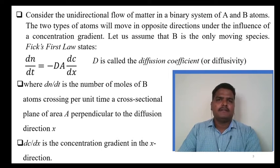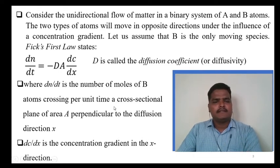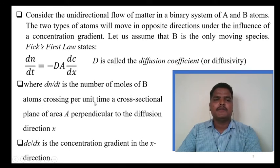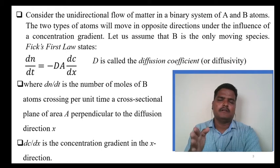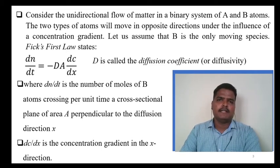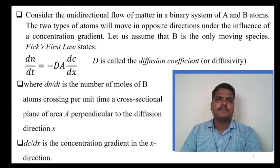We only consider flow of atom B into A. This law mathematically tells us dN/dt equals minus dA dC/dx, where dN/dt is the number of moles of B atoms crossing per unit time through cross-sectional area of plane A perpendicular to the diffusion direction X. Whenever B-type atoms cross through A-type material with cross-sectional area A, we have to see the total number of moles of atoms that pass from B side to A side.